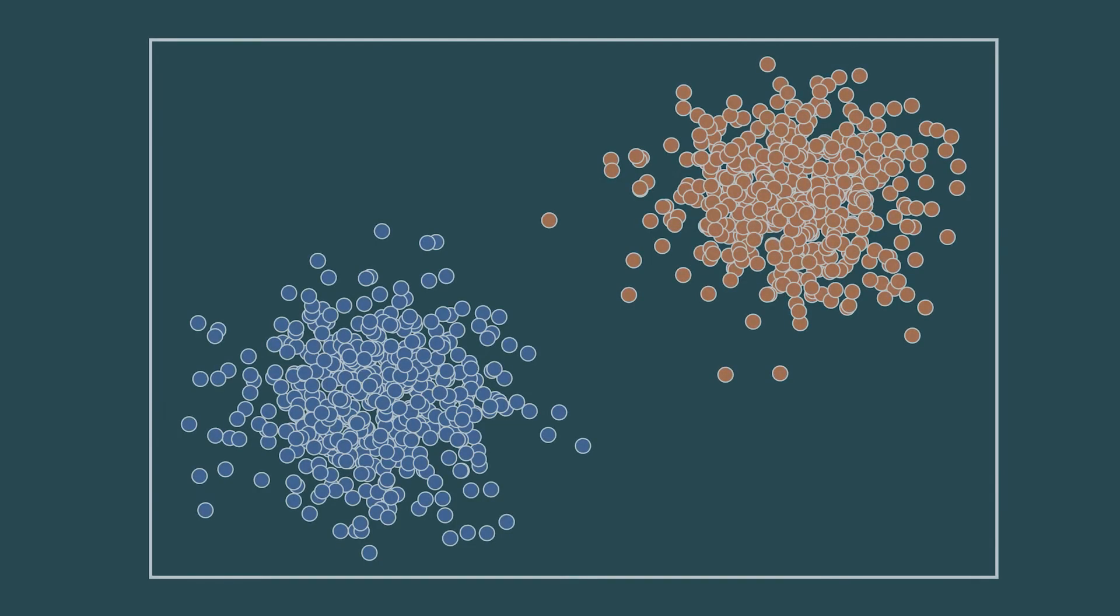To understand linear classification, we're going to first plot some data. You can see two classes, the blue and the orange class.